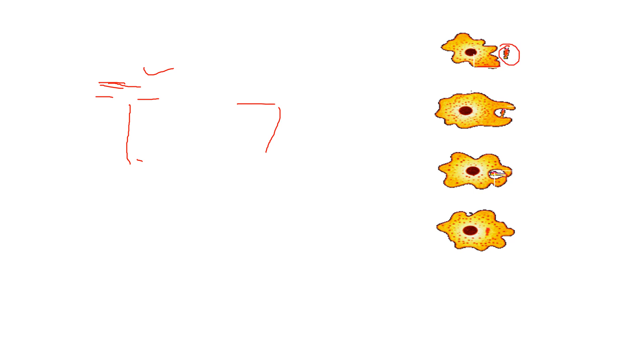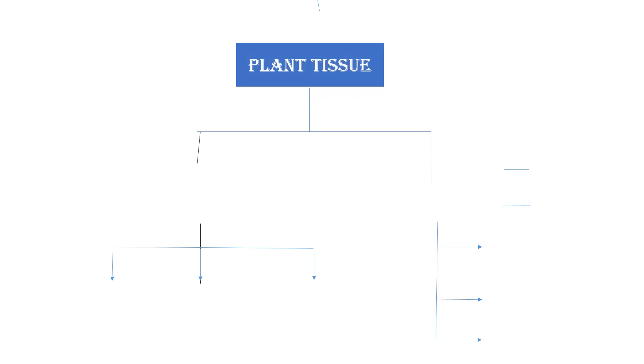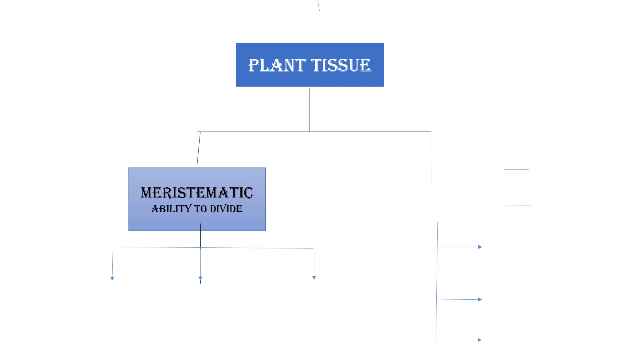Regarding endocytosis: it is the process of taking up food. Just as humans take up food through ingestion, some organisms like amoeba take food by creating pseudopodia and engulfing it in the form of a vacuole, called a food vacuole. That process of taking food in the form of a vacuole is called endocytosis.